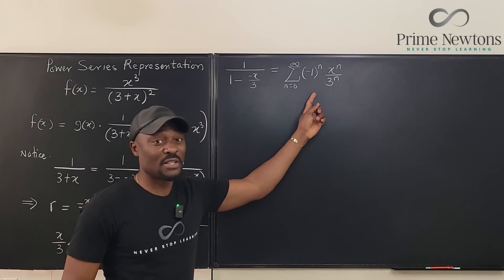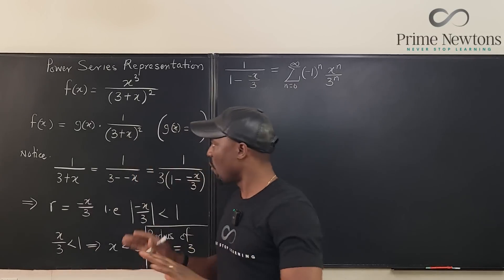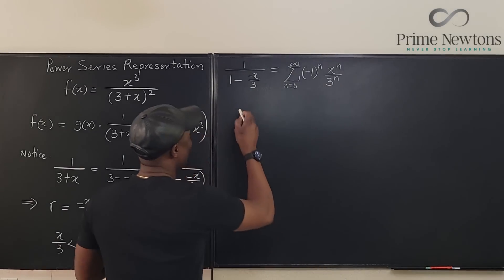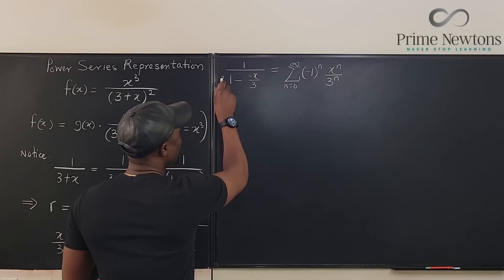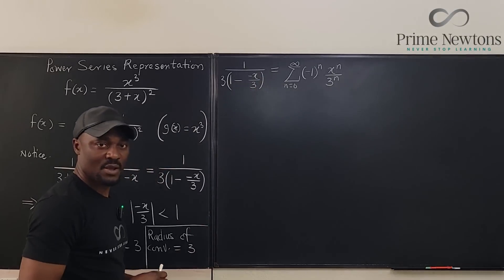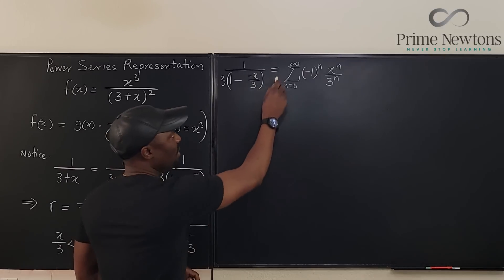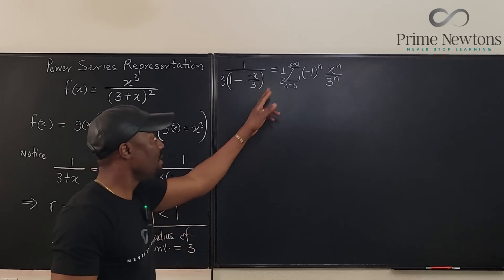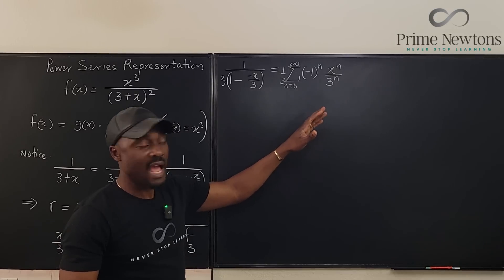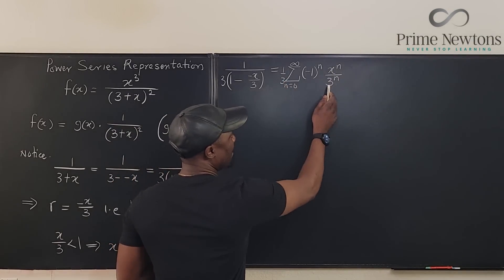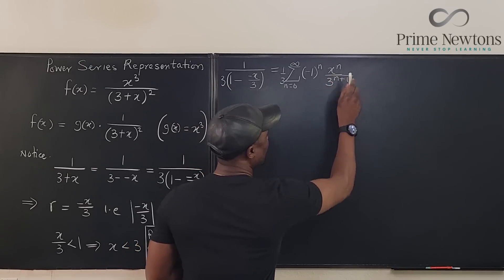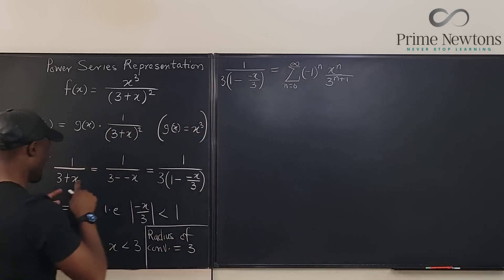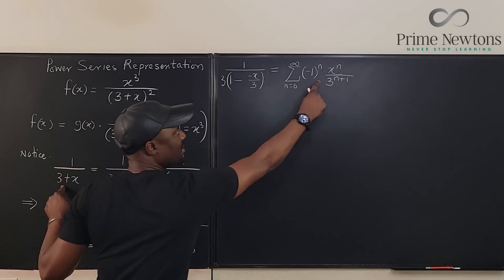Remember we factored out a 3 earlier, so we need to bring it back. Multiplying through by 1 over 3 means the denominator picks up an extra factor, giving 3 to the power n plus 1 in the denominator. So the power series for 1 over (3 plus x) is the sum from n equals 0 to infinity of (negative 1)^n times x^n over 3^(n+1). I have now written this as a power series expression.